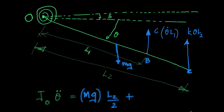There are two approaches: you can neglect weight and say vibration is caused only by dynamic forces, since weight doesn't change with the motion of the bar. But I recommend taking the static deflection position as your reference and defining theta from that equilibrium position — that way the weight terms cancel out systematically.